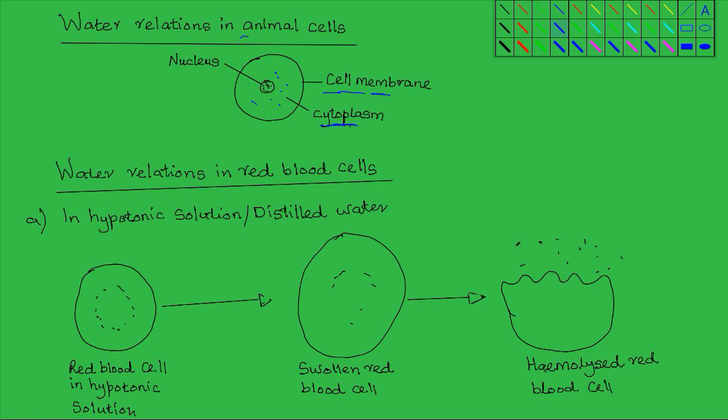When an animal cell is placed in a solution, it will either gain water by osmosis or lose water by osmosis. It all depends on the osmotic pressure gradient. So if it is placed in a hypertonic solution, it will lose water by osmosis, and when placed in a hypotonic solution, it will gain water by osmosis.